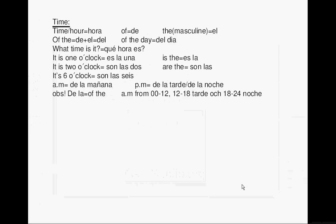Welcome to lesson 14 in Spanish. 'Time' or 'hour' in Spanish is 'hora.' 'Of' is 'de,' and 'de' plus 'el' becomes 'del.' So 'of the day' is 'del día.' 'What time is it?' is '¿Qué hora es?'